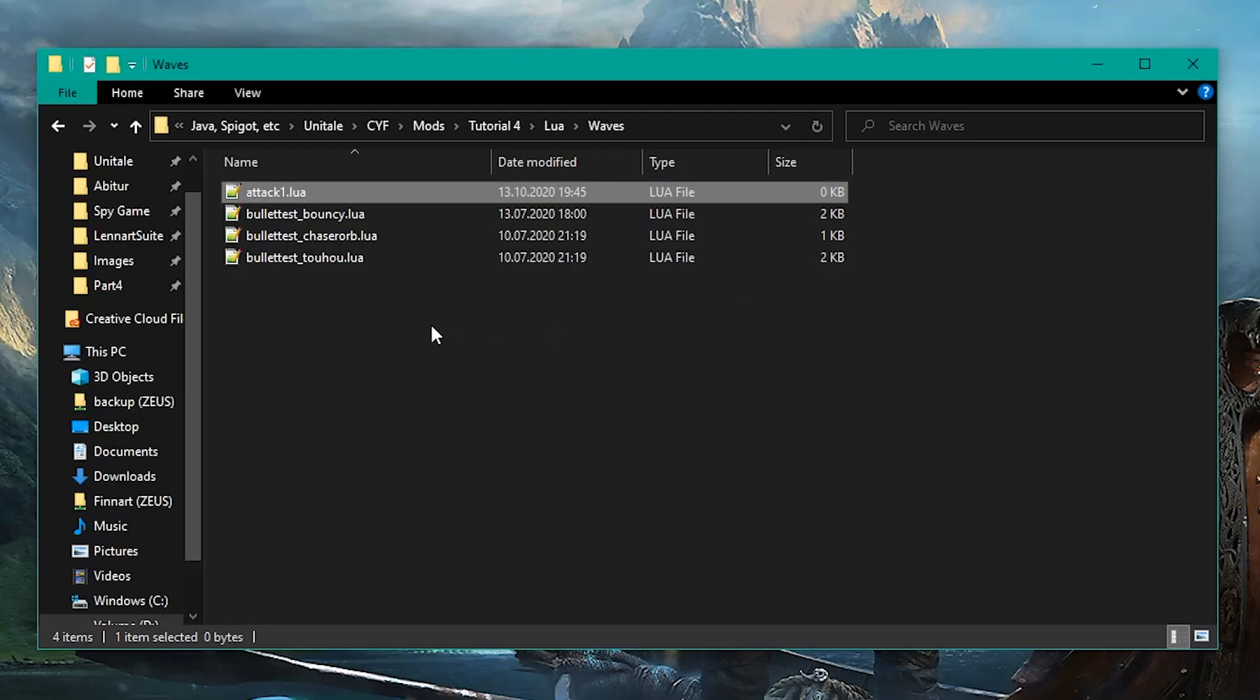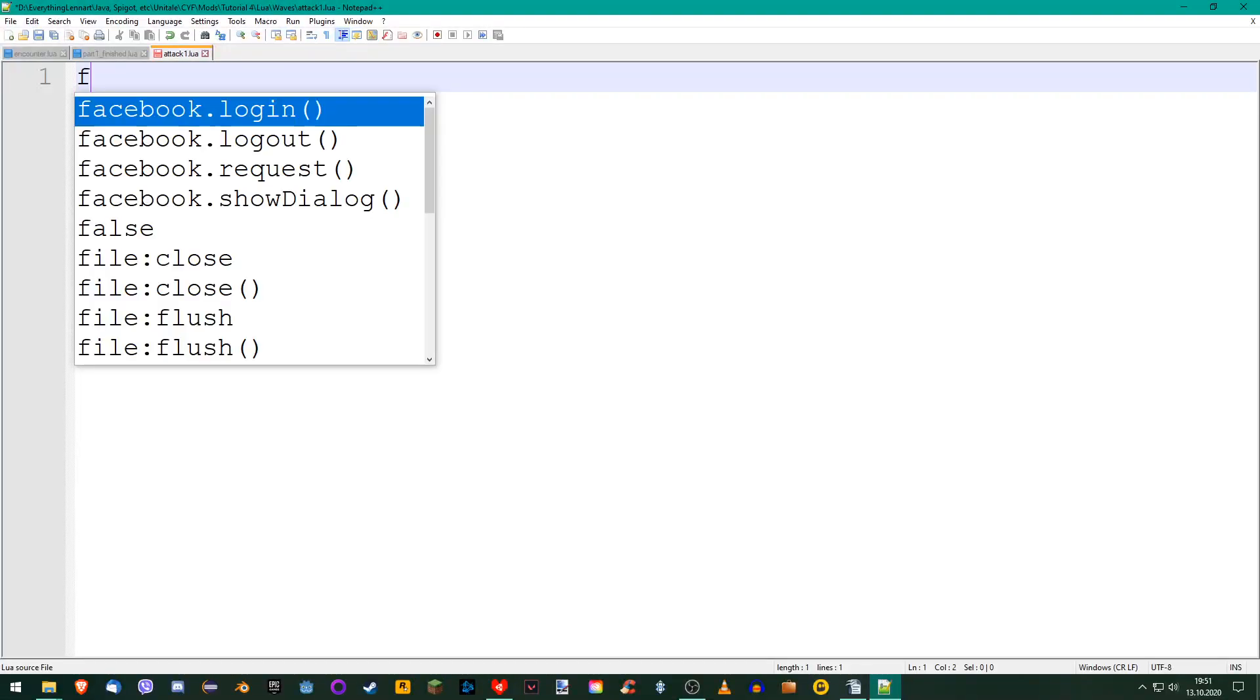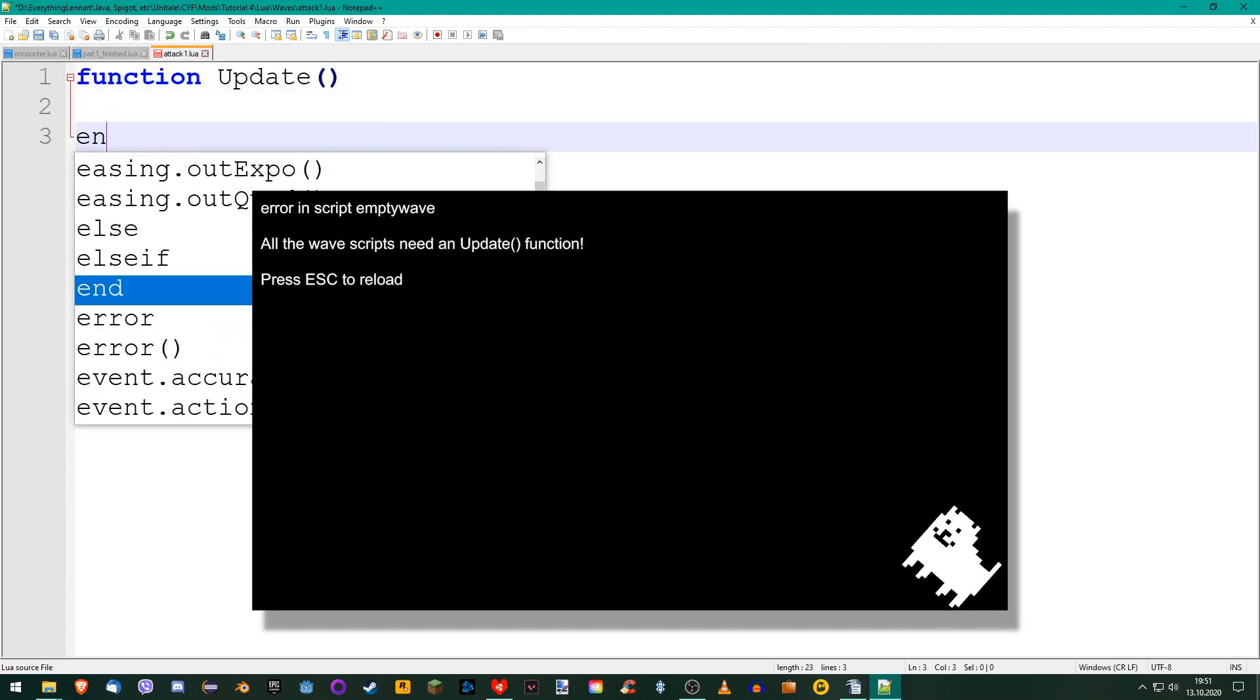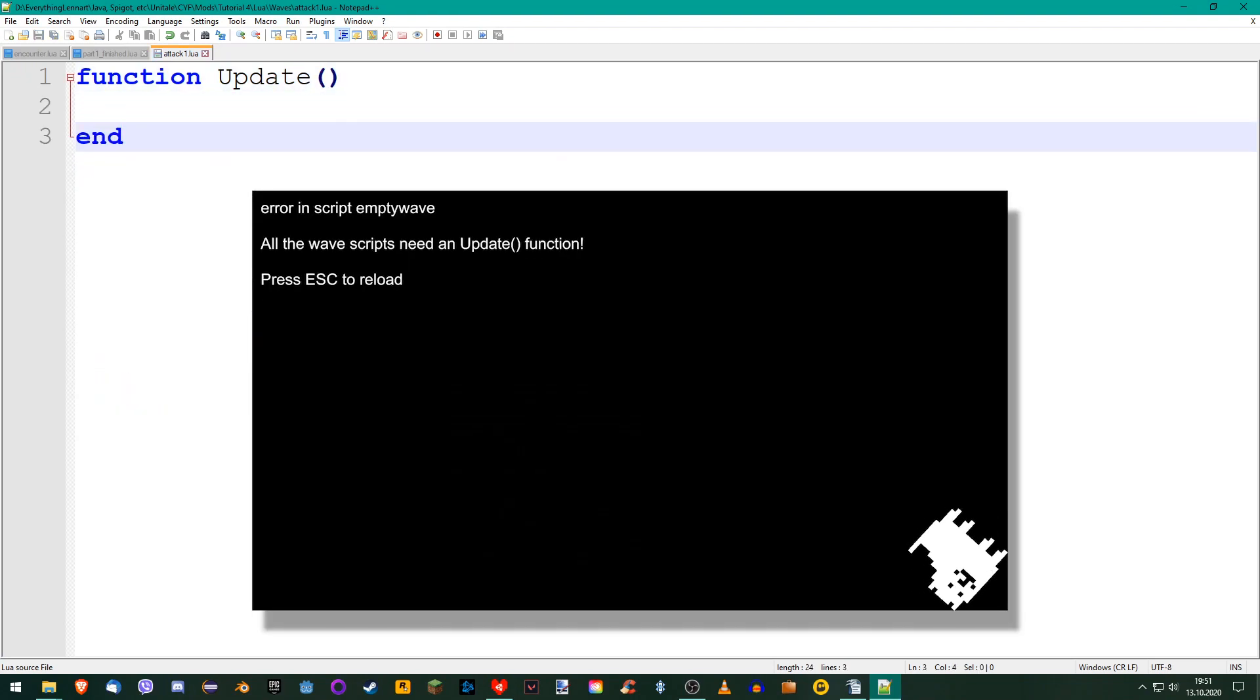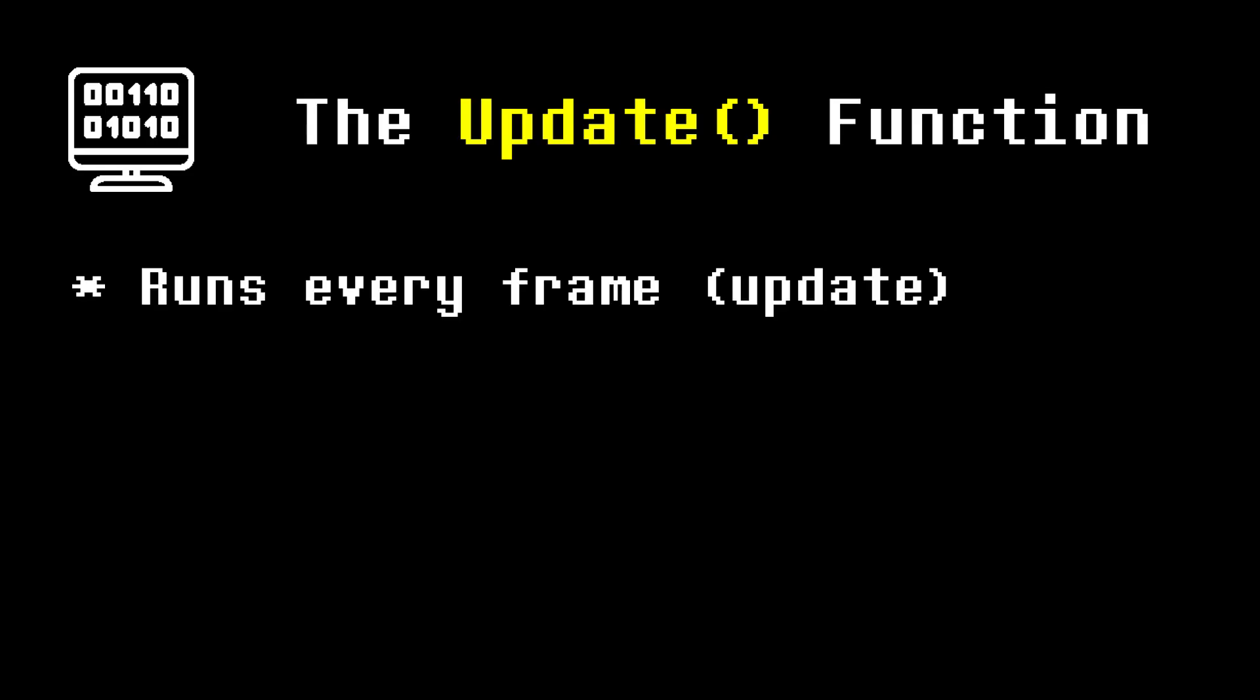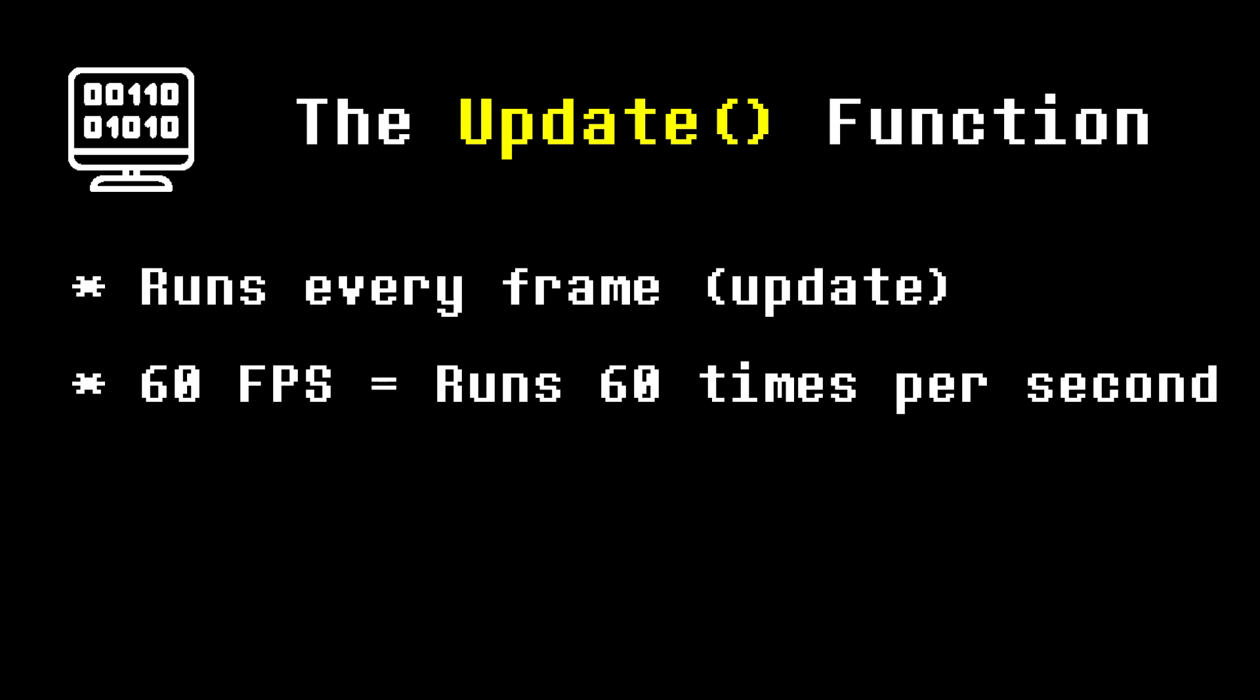Next, open your wave script. We need to add the update function. It is required for every wave script or else Unitale will give you an error when the wave starts. It can be empty, it just has to exist somewhere. The update function runs every frame while the attack is active. Unitale normally runs at 60 fps, or frames per second, so the update function runs 60 times per second. It usually contains most of the wave's code.